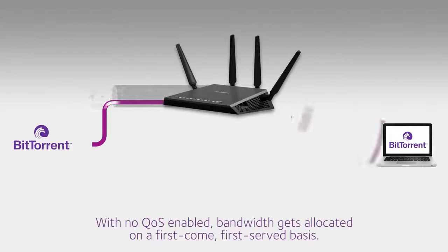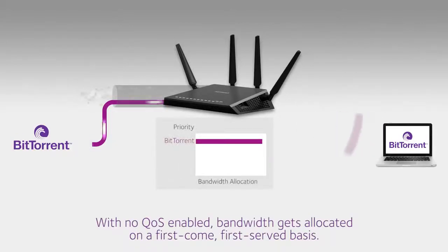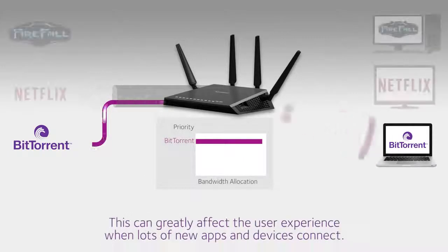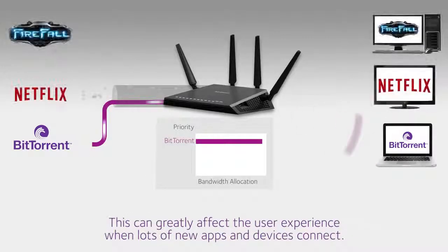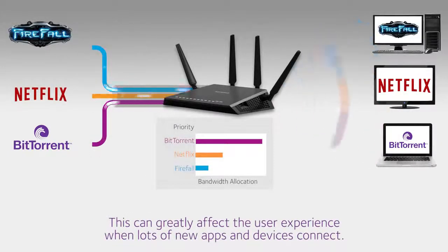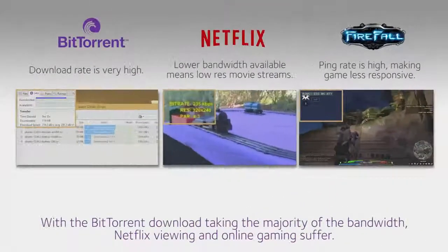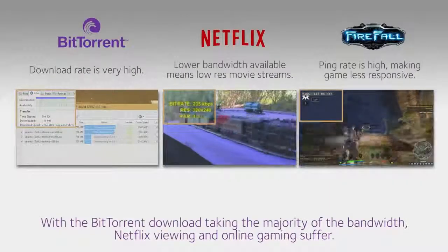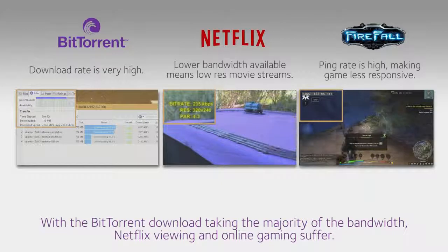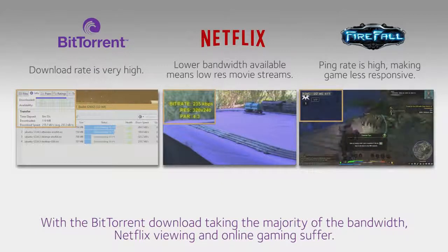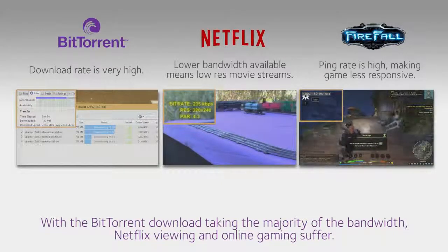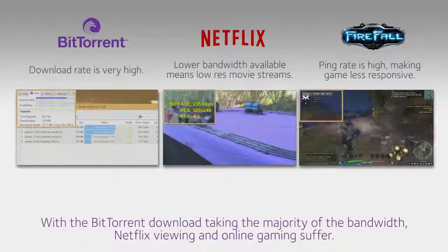With no QoS enabled, the X4 router simply allocates bandwidth on a first-come, first-served basis. This can greatly affect the user experience when lots of new apps and devices connect. With a majority of the bandwidth taken up by a BitTorrent download, Netflix viewing and online gaming suffer.